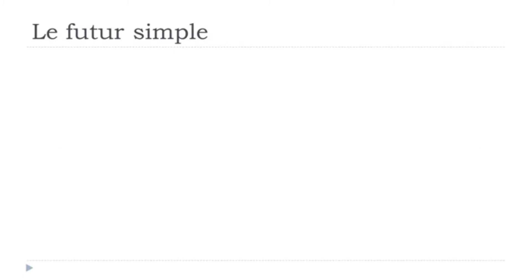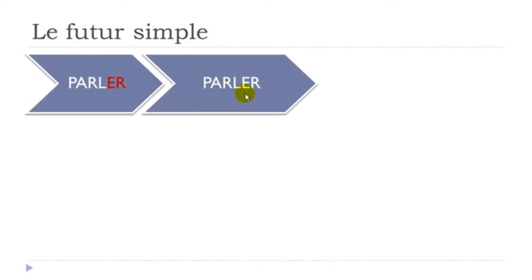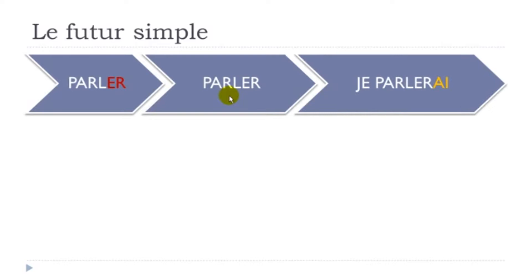We'll see the difference between the three groups of verbs in French. The first group ends with ER — remember 'parler', to talk, to speak. For this group, you don't change anything. You just keep the basic infinitive form, and after that you put the ending AI for 'je'. So you don't touch the infinitive form, you just put that ending at the end.